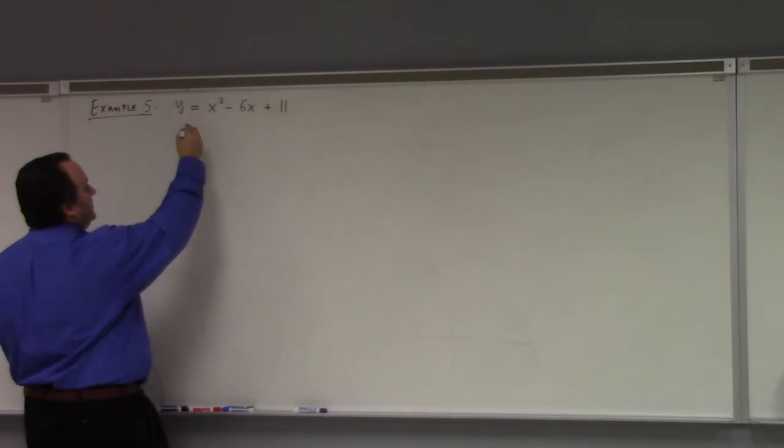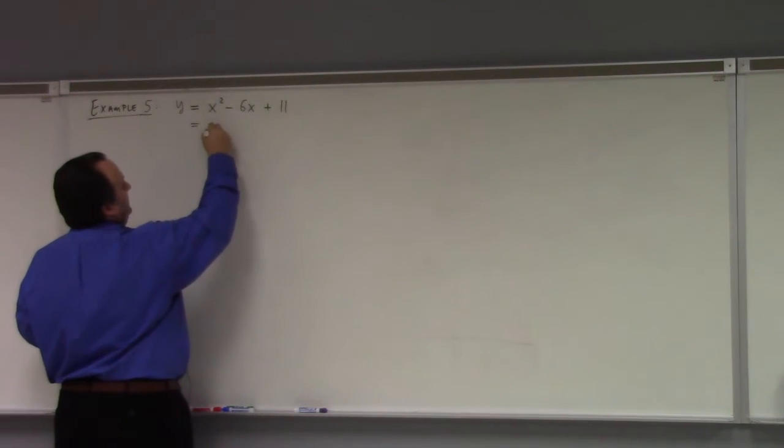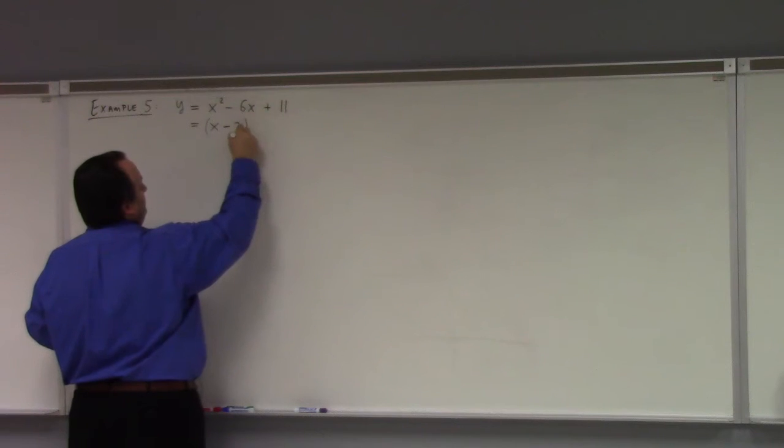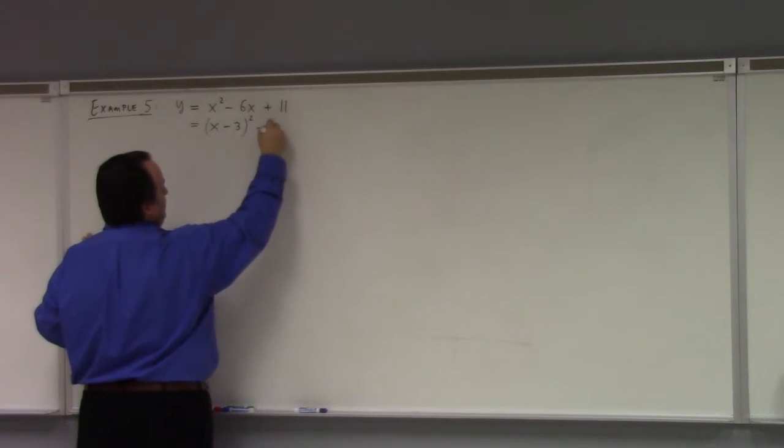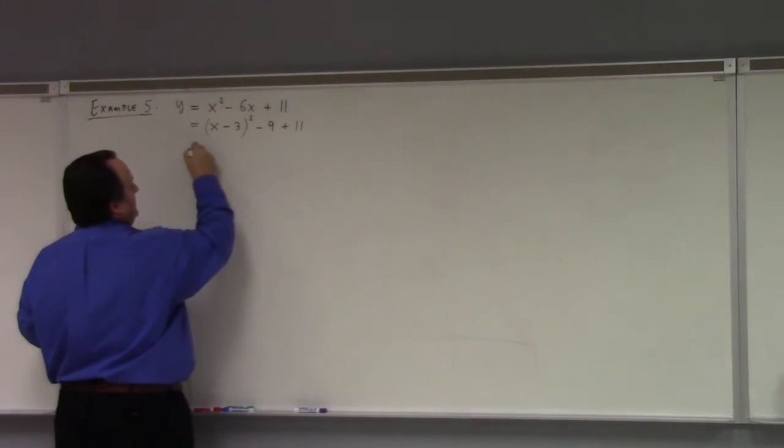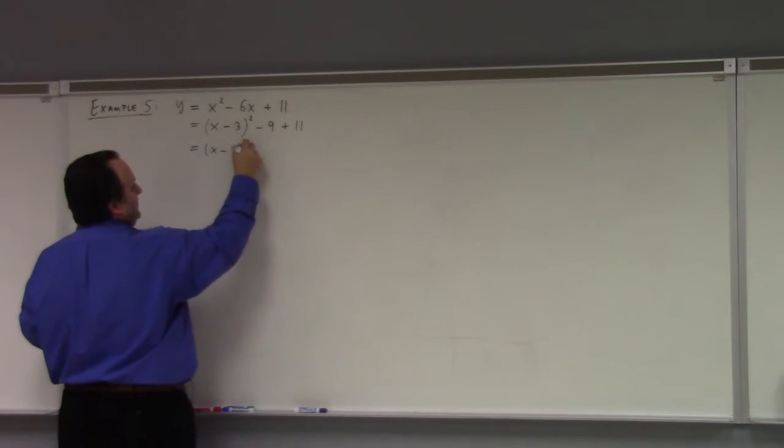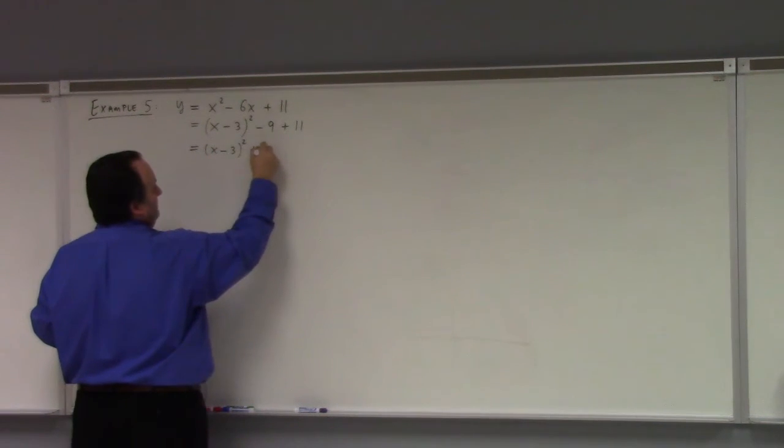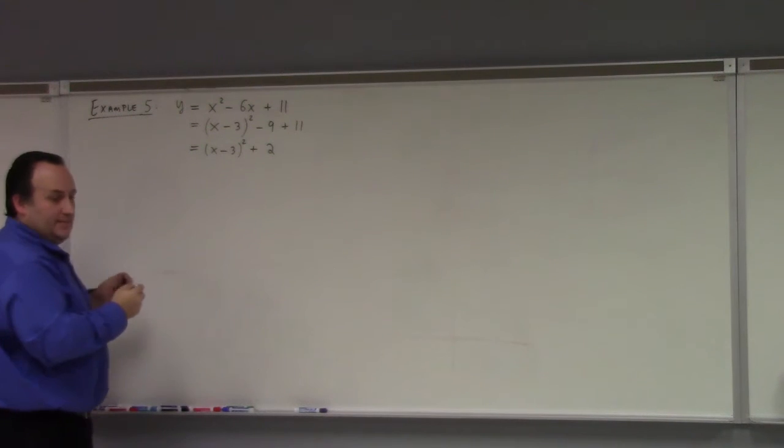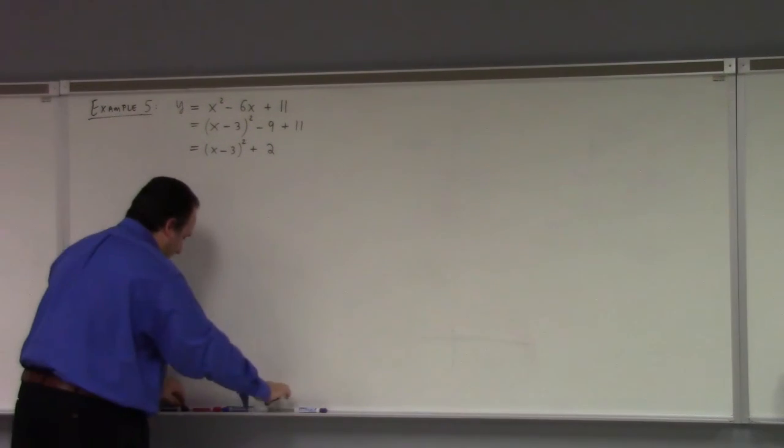So here, complete the square, we have (x - 3)² minus 3 squared, which is 9, plus 11. And so what we have is (x - 3)² plus 2.